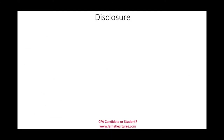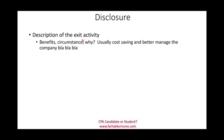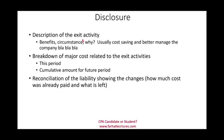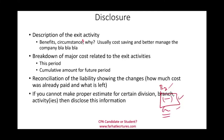What else do we have to do? We have to disclose. The company will have to tell investors what's going on. In the annual report, you need to put a description of the exit activity — the circumstances and why you underwent this, usually for cost saving and to better manage the company. You also have to break down the costs of major activities for this period as well as the cumulative amount for future periods. You also have to reconcile the liability — show the beginning liability, what was paid off, and the ending liability. And if you cannot properly estimate the cost for certain activities or divisions, disclose that as well.